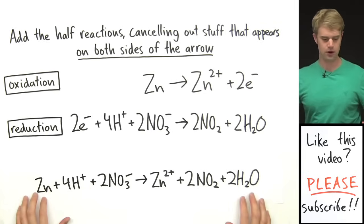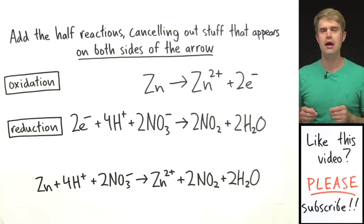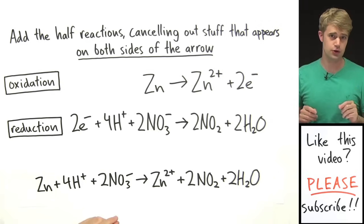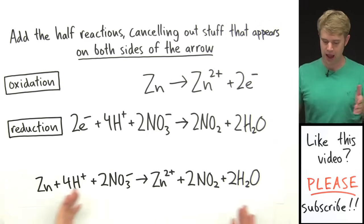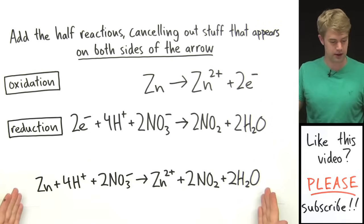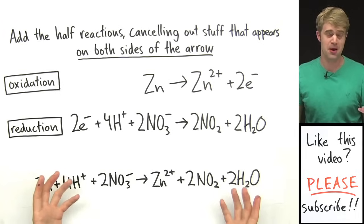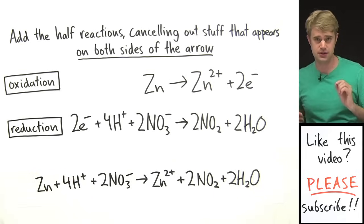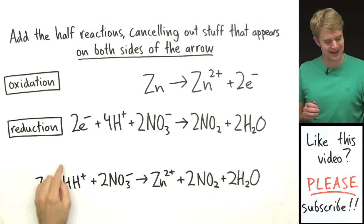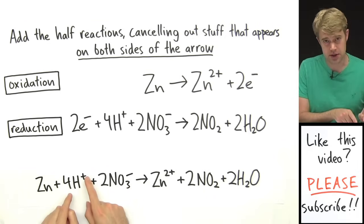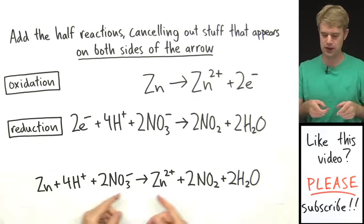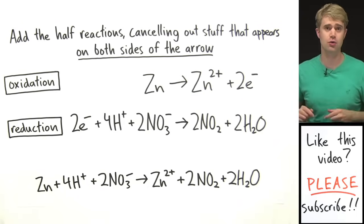If our goal was to balance this in acidic solution, we'd be all set — everything balances and we're left with H⁺ ions which make the equation acidic. But we've got to balance this in basic solution, which means we need to go through a couple more steps to get rid of these H⁺ and replace them with OH⁻, which make things basic.